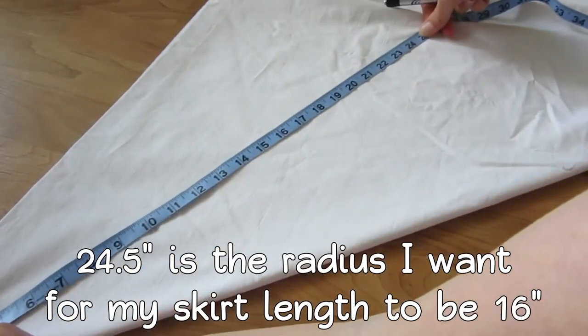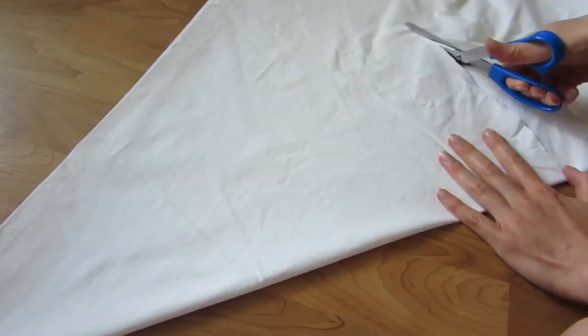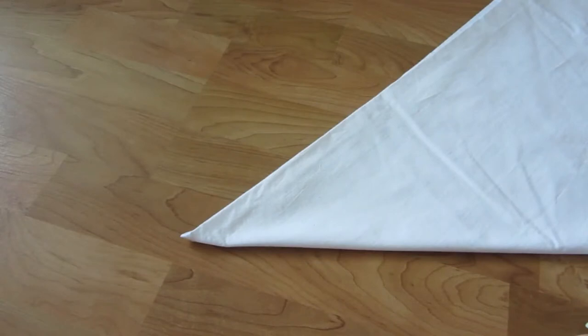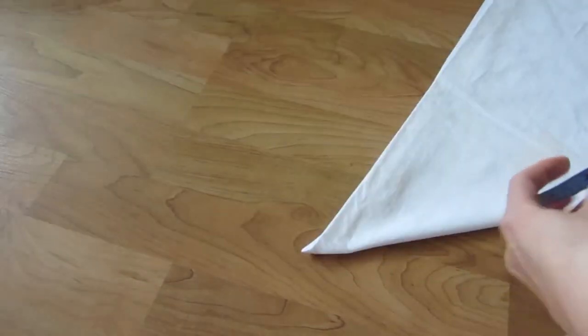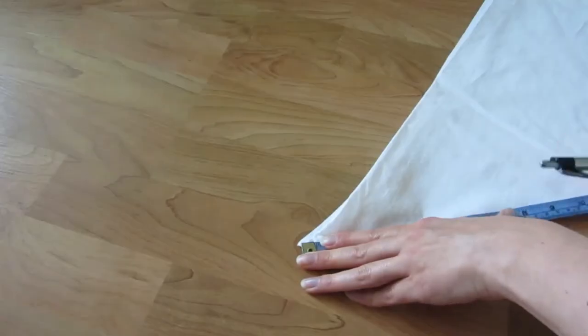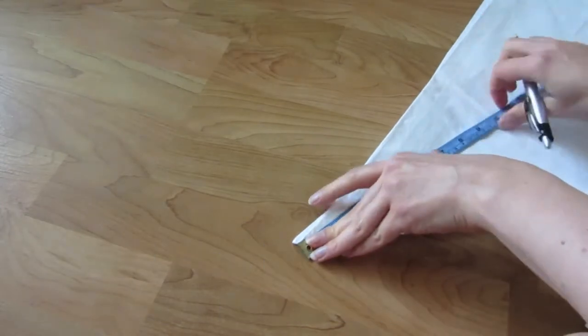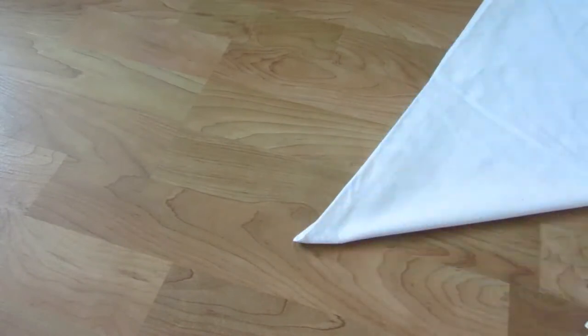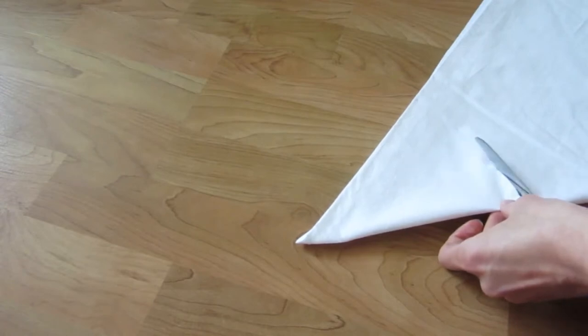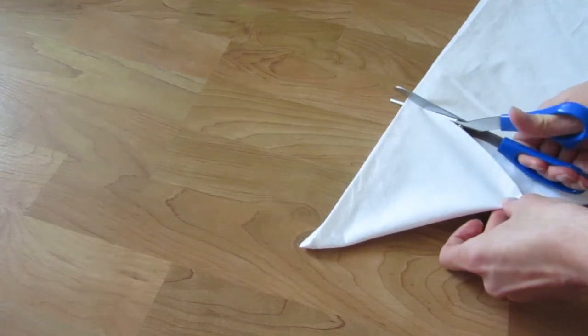Measure from this corner point again and I just keep measuring from the corner point to 24 and a half. And I'll just keep making little marks and now I will just start making my cuts. And now what we want to do is make sure that this is eight and a quarter inches from here. I'm going to go from this point and give it till eight and a quarter and we'll do the same thing. I'm going to try cutting.